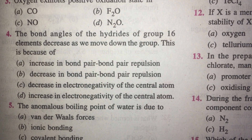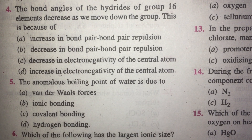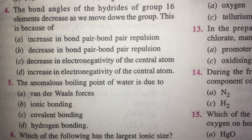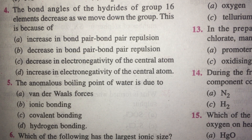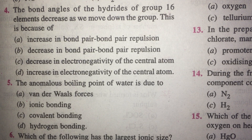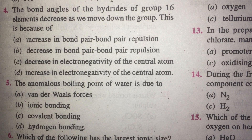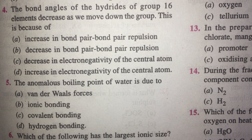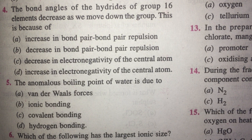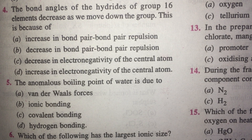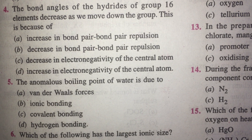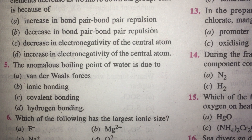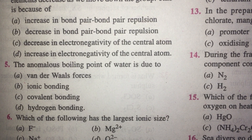The anomalous boiling point of water is due to intermolecular hydrogen bonding — bonding between water molecules. The hydrogen bond strength in H2O is not as strong as in HF, but HF has a surprisingly lower boiling point than H2O. The reason is that each water molecule forms 4 hydrogen bonds, whereas each HF molecule forms only 2.